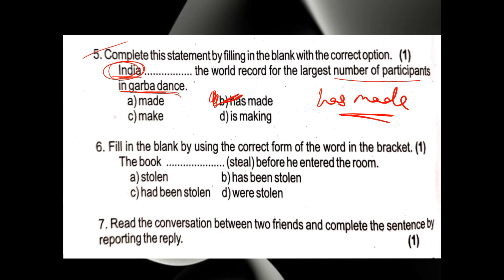Sixth question: 'The book dash steal before he entered the room.' 'Before he entered the room' is in the past, and the action of stealing happened before that — so we use past perfect. It is also passive. The formation is: had + been + V3. Since the verb is in a past context, 'has' will not come. Correct option: 'The book had been stolen before he entered the room.' Option C is correct.